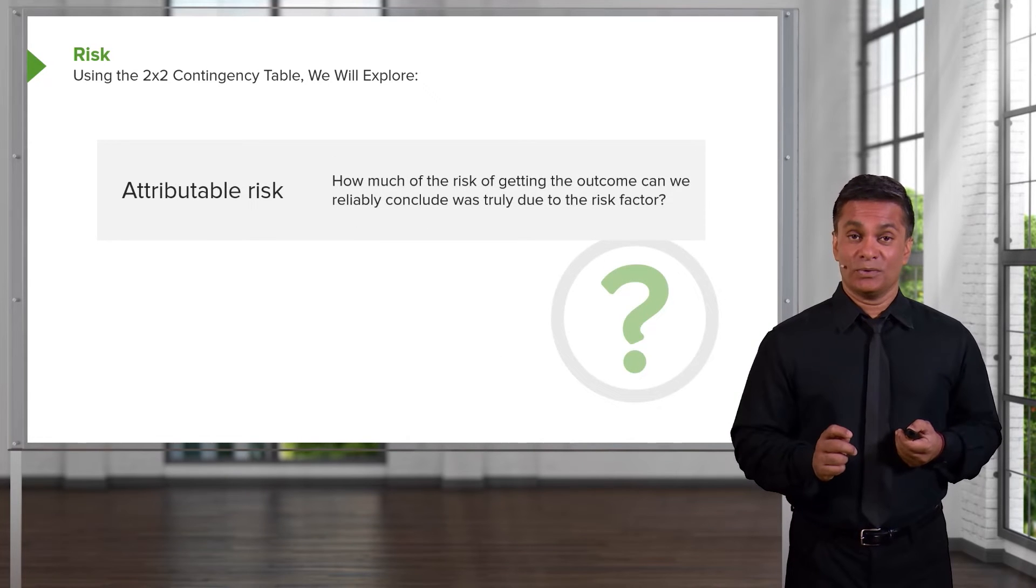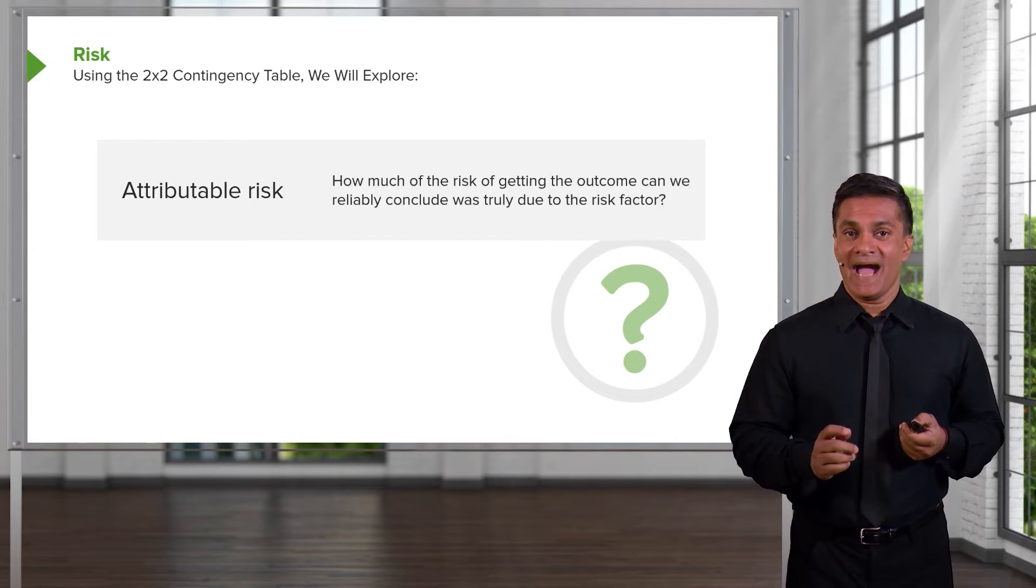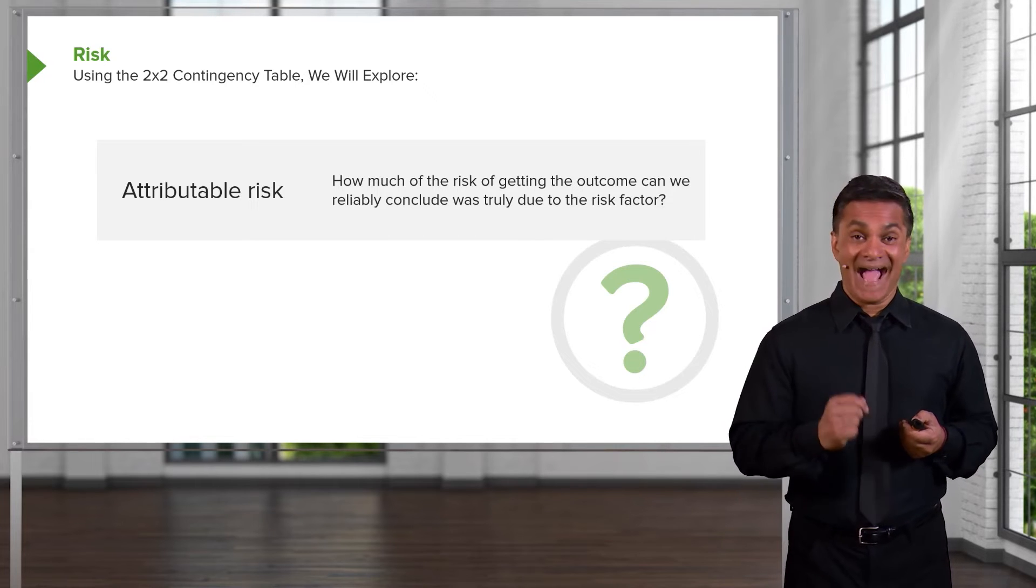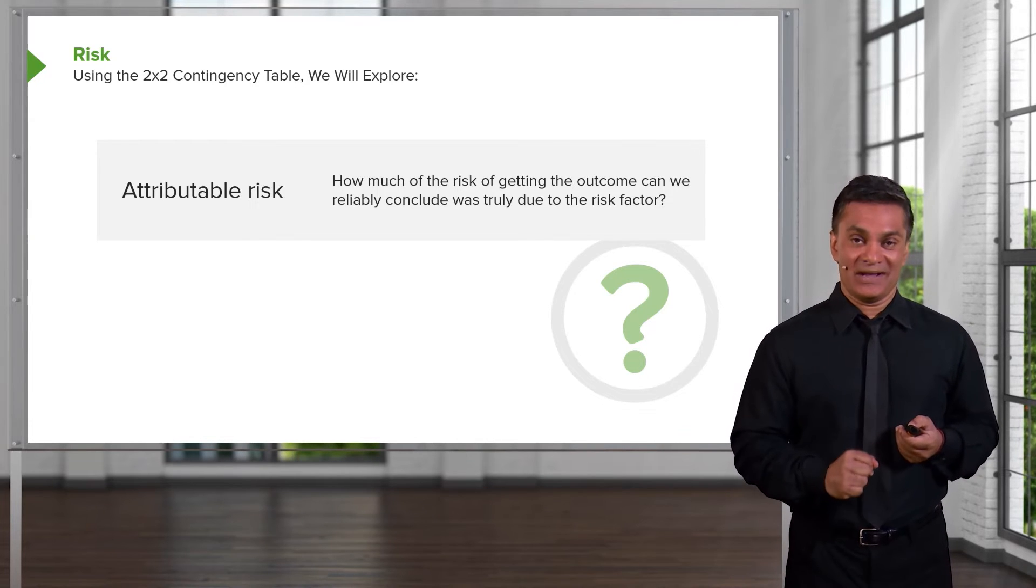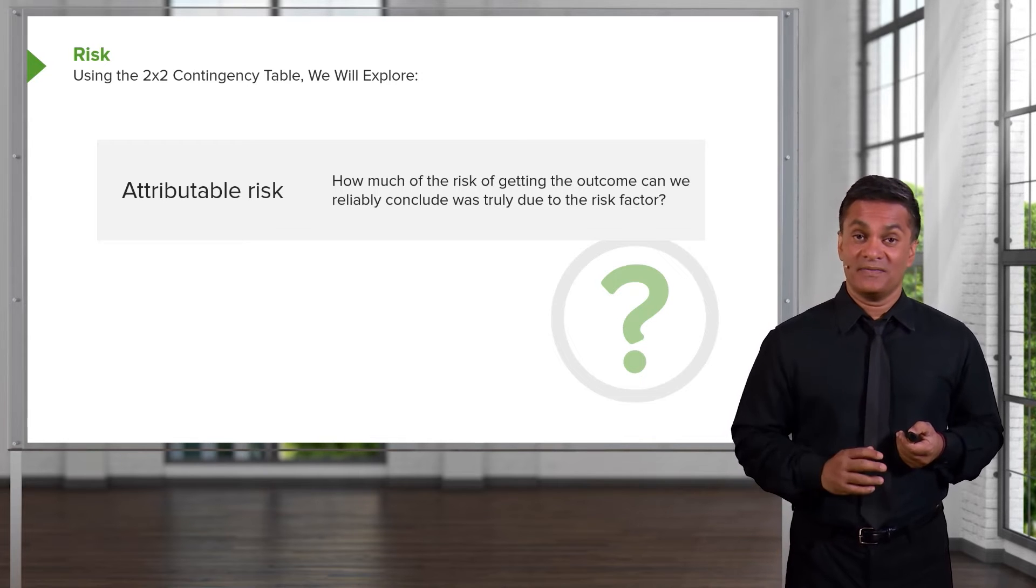We're also going to explore, in another lecture, attributable risk. That's when we try to compute how much of my outcome was actually due to the behavior that I care about. How much of the lung cancer was actually due to the smoking and not to other factors.